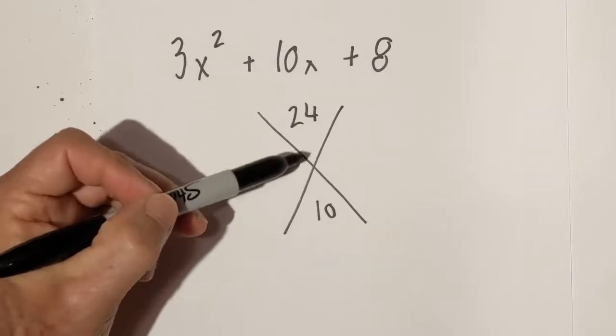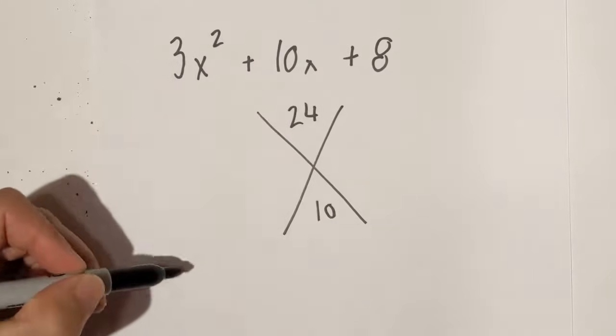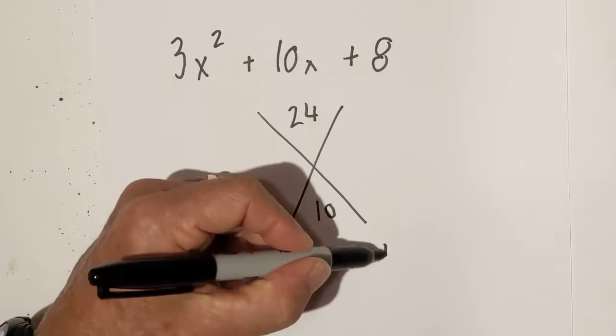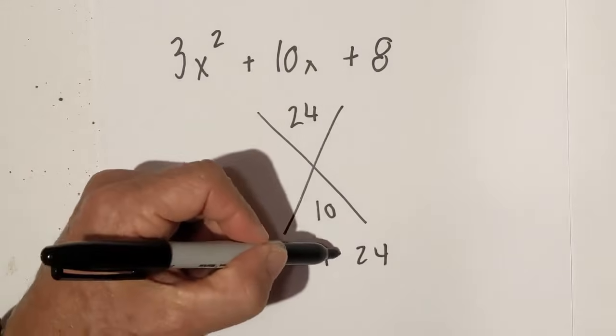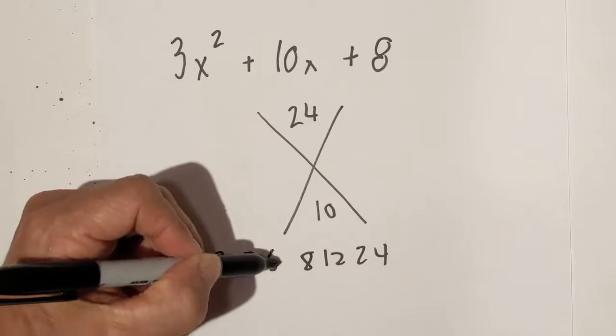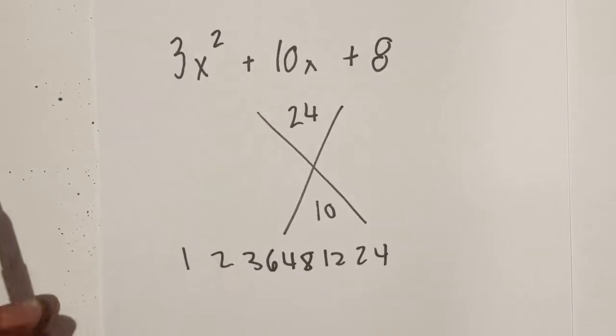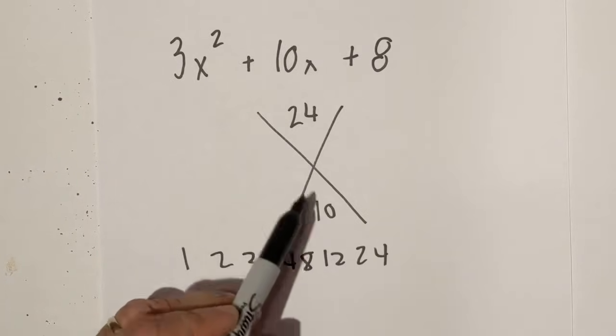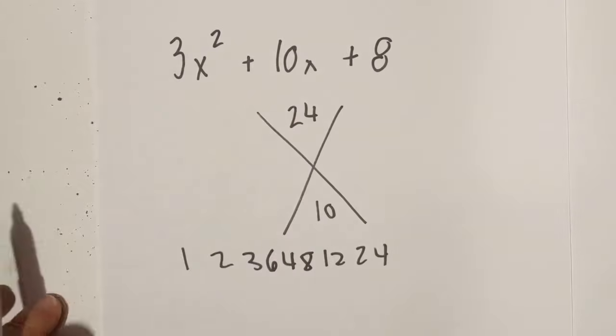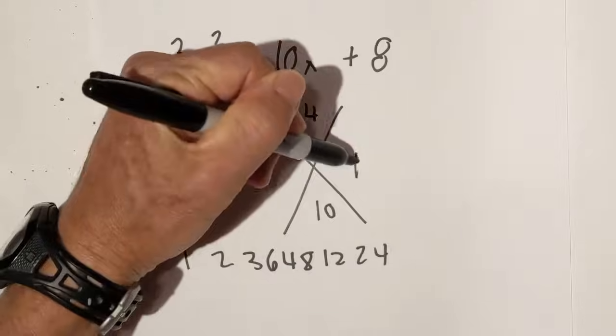Now I ask myself: what multiplies to 24 and adds to 10? Let's start factoring 24: 2, 12, 3, 8, 6, 4. Hmm, 6 and 4 add to 10 and multiply to 24, so I'm going to write 6 and 4.